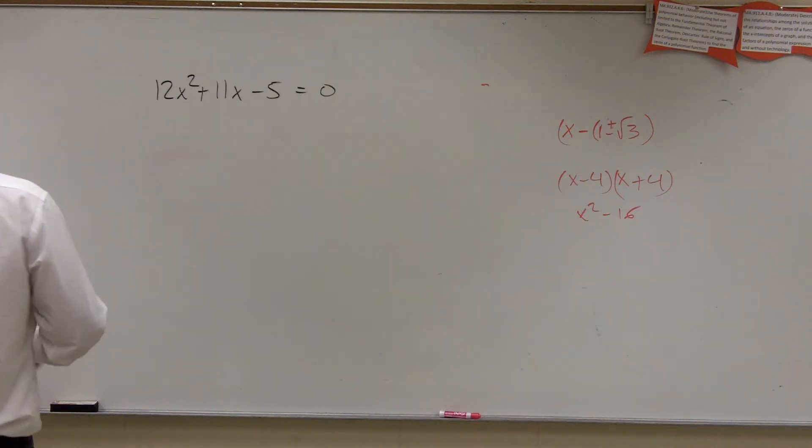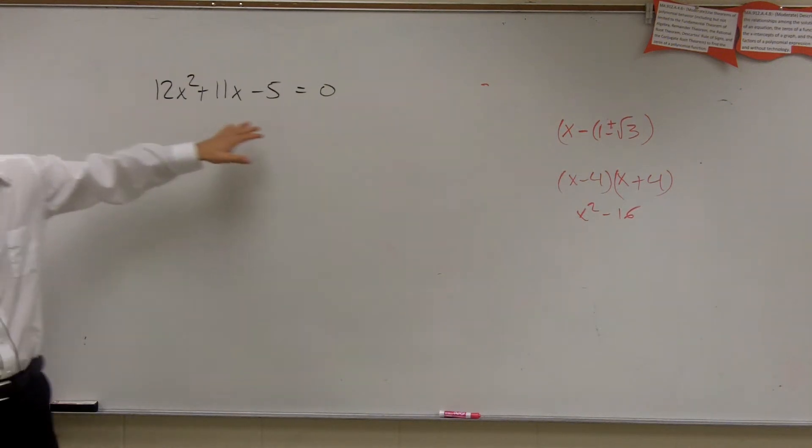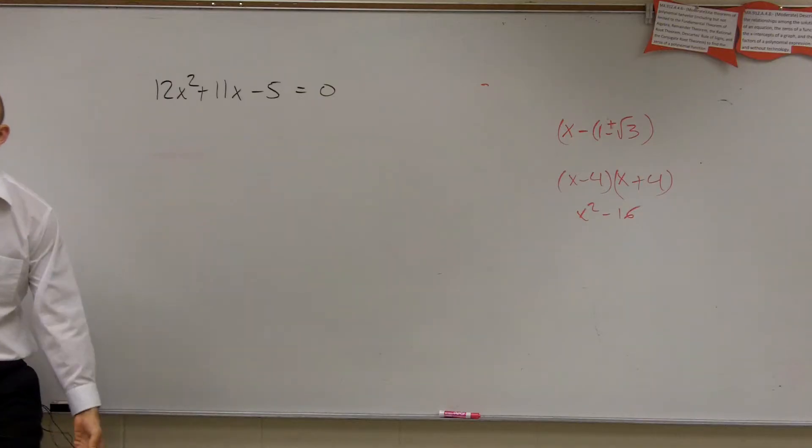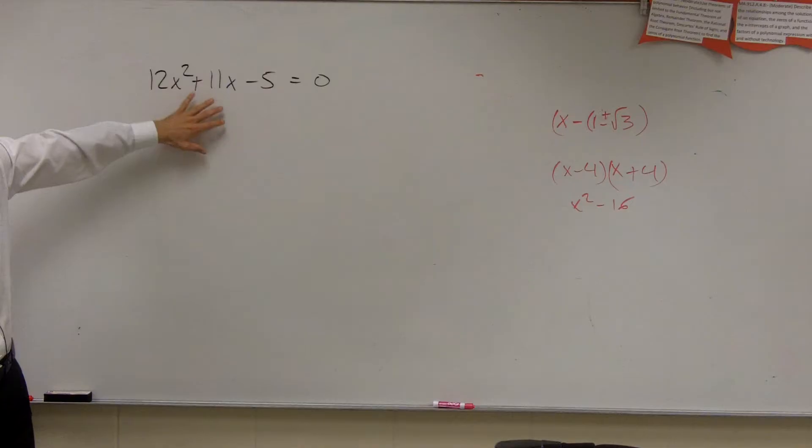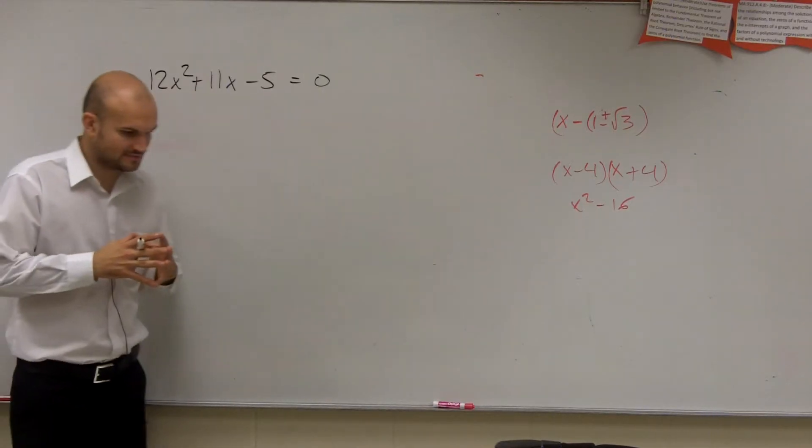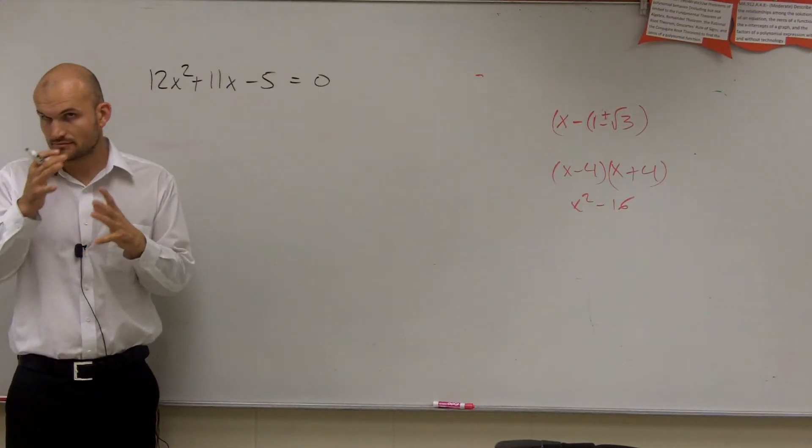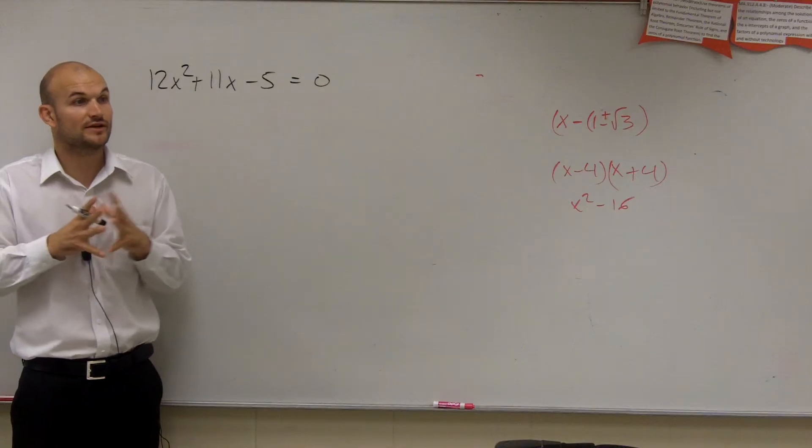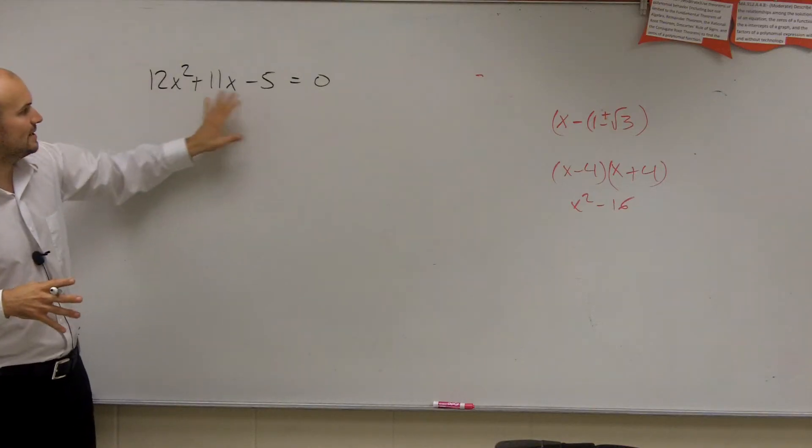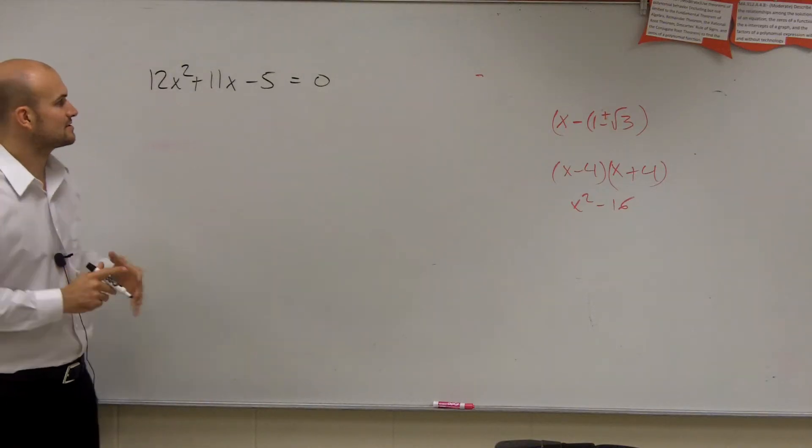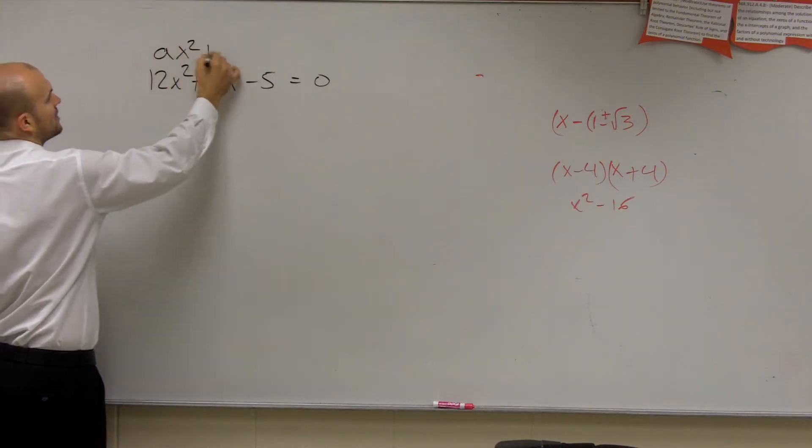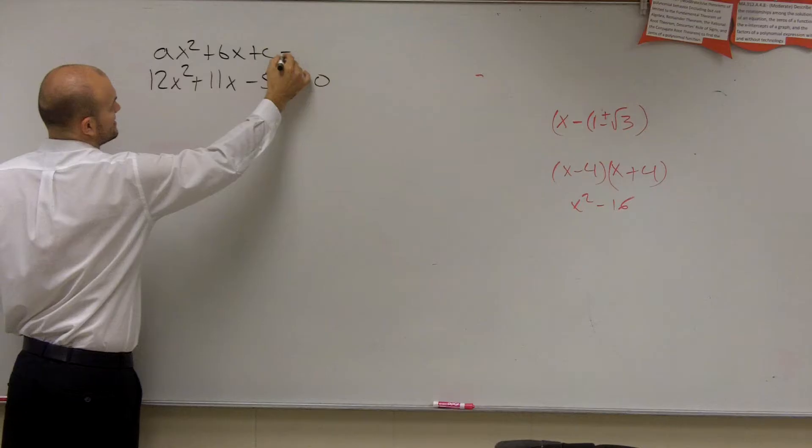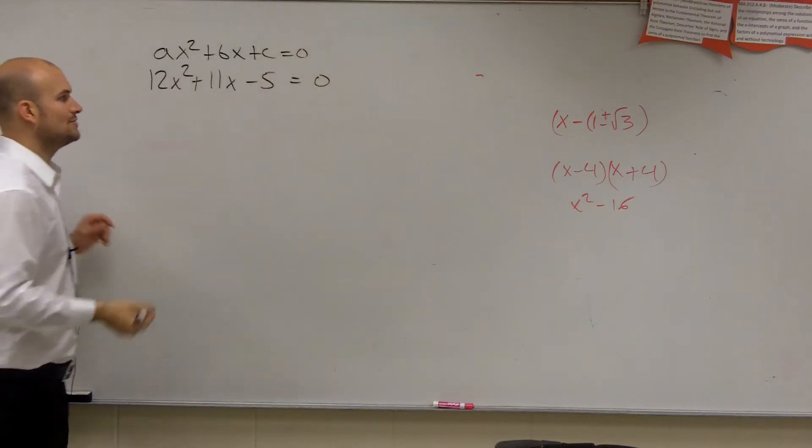To solve this problem, what we need to do is solve this by factoring. So I'm going to use a visual diagram to help me figure this out, and we need to put this down to its factors. Remember this is in quadratic form, ax squared plus bx plus c equals zero.